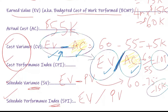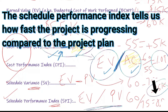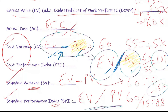For the schedule performance index (SPI), it's earned value divided by planned value: 60 divided by 75, which gives 0.8. That means we're running at 80% speed, which makes sense because we did four miles instead of five miles — four is 80% of five.